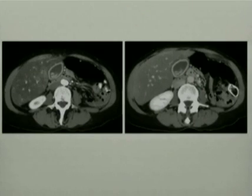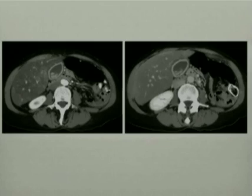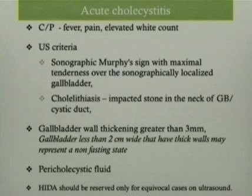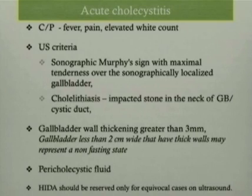In today's world, CT scan plays an important role in any patient who walks into the ED with abdominal pain, and most of these cases who do not have a primary diagnosis of gallbladder disease may get a CT scan first before an ultrasound. These two CT pictures demonstrate a very classical picture of acute cholecystitis — you see a very enhancing thickened gallbladder wall, some gallstones, pericholecystic fluid, and gallbladder wall edema. Patients usually present with fever, pain, and elevated white count.